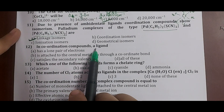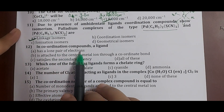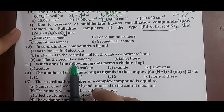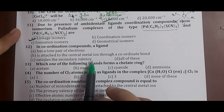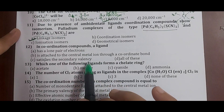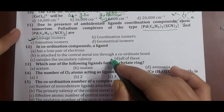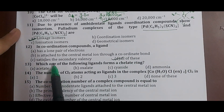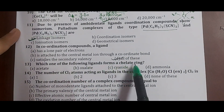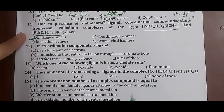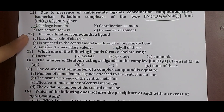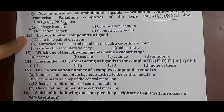Question 12: in coordination compounds, a ligand has a lone pair of electrons, is attached to the central metal ion through a coordinate bond, and satisfies the secondary valency. All of these are correct — a ligand donates its lone pair to form a coordinate bond and satisfies the secondary valency. Correct answer: option D, all of the above.